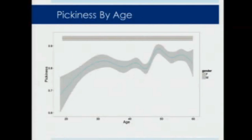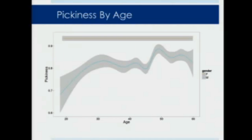We do this on an ongoing basis for all of our users. As an example, this is how picky people are by age. You can see women are pretty picky all the time. You can imagine Pam would be somewhere around here, Blaine would be here — he's younger and he doesn't care — and Rupert would be somewhere up here.